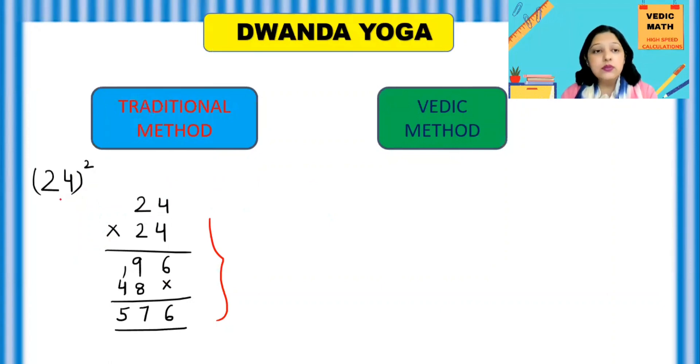To start this one, to solve this 24 square, let's take one simple number first. For example, if you want to find a square of let's take 21. Okay, so 21 times 21 is 21 square. So if you want to find a square of 21,